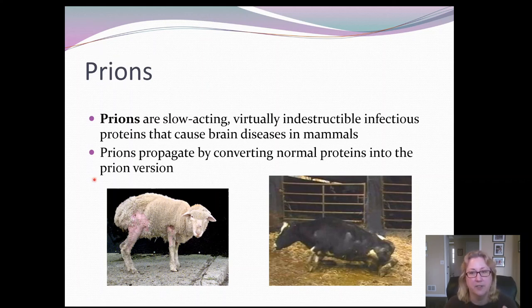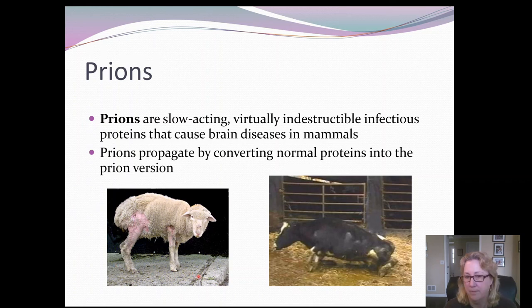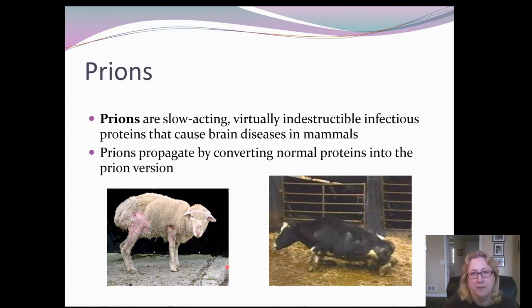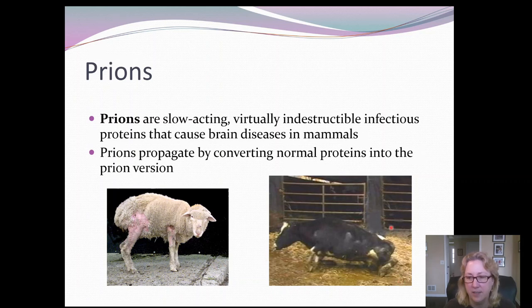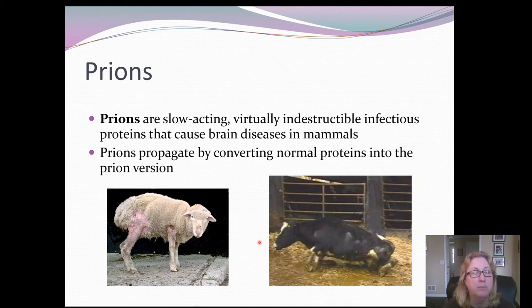The misfolded prions gradually fill up the brain with abnormal protein that sticks together into large aggregates and kills brain cells. The first prion disease ever described — recorded in literature for hundreds of years — is scrapie in sheep. Sheep with scrapie rub themselves on the side of a barn or on trees until they rub their fur off, which is why it's called scrapie. In cows it's called mad cow disease, where cows lose the ability to walk and vocalize excessively.